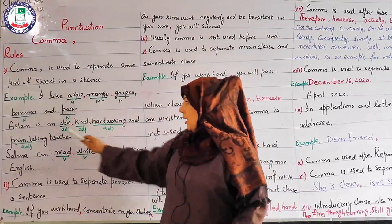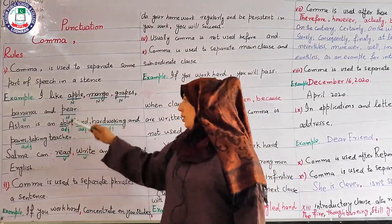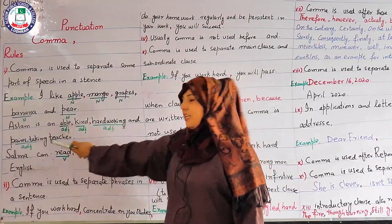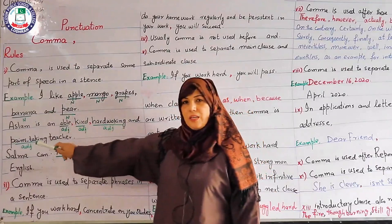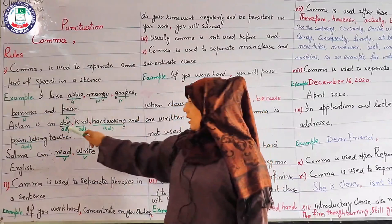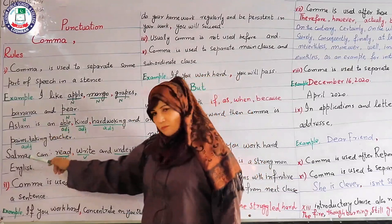Next example: 'Aslam is an able, kind, hard-working and painstaking teacher.' Here adjectives are used in a sentence. We have used 'and' between the last two adjectives. Able is an adjective, kind is an adjective, hard-working is an adjective, and painstaking is also an adjective — same rule applies.